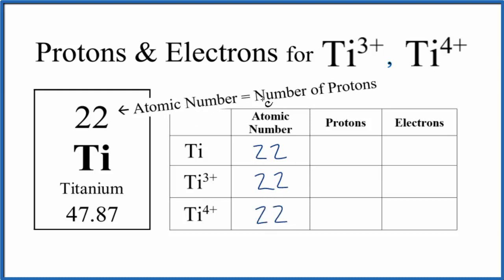The atomic number equals the number of protons. So the number of protons for Ti is 22. Same for the ions, Ti3+ and Ti4+, 22.